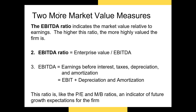The enterprise value is the numerator in what's called the EBITDA ratio, which is another measure of market value. The higher this ratio, the more highly valued the firm is. The EBITDA ratio is calculated as enterprise value divided by earnings before interest, taxes, depreciation, and amortization. Some firms report EBITDA directly; for others, you'll have to take EBIT and add in depreciation and amortization. Like the PE ratio and the market-to-book ratio, this is yet another measure of expected future growth prospects — the higher it is, the more investors are willing to pay for a dollar of current income.